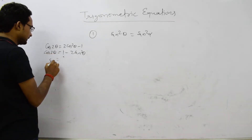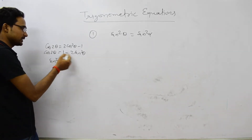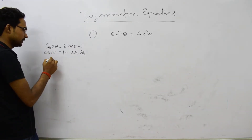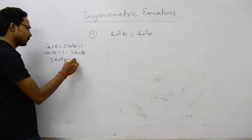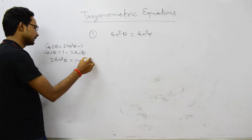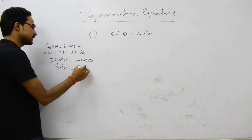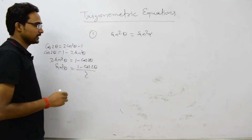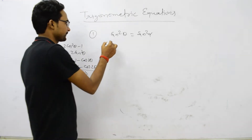From this, we can write sin²θ = (1 − cos 2θ) / 2. So on the place of sin²θ, we can use this formula.